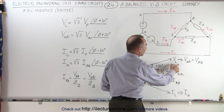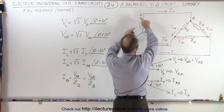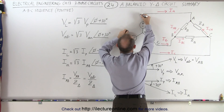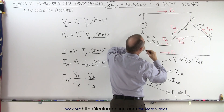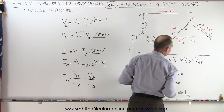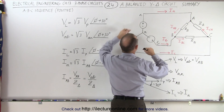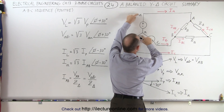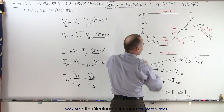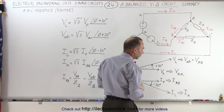The representation of the line voltage is the voltage from A to B, and it's also the voltage between A and B at the load. The phase voltage can be found by taking the voltage from A to N, from B to N, or from C to N. We're just using A and B here as a representation.